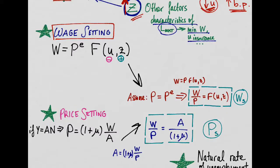So now we assume that prices are equal to the expected level of prices. That allows us to rewrite the wage setting as real wages, which is just the wage over the price, equal to this function right here.